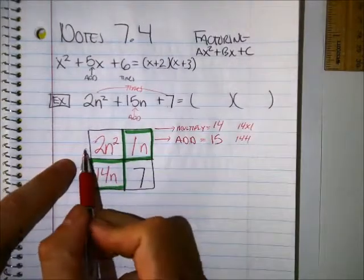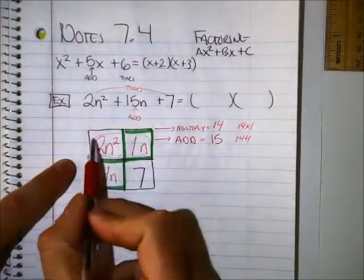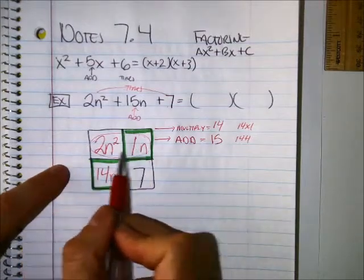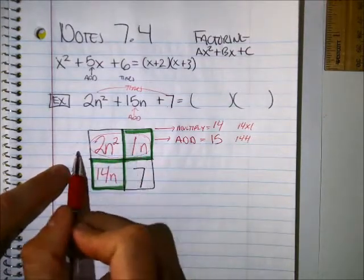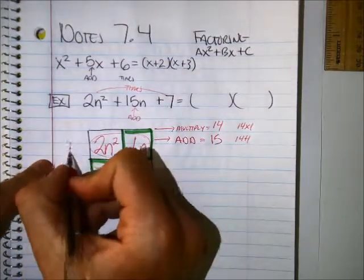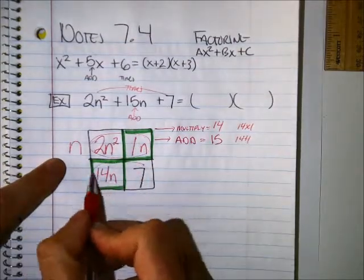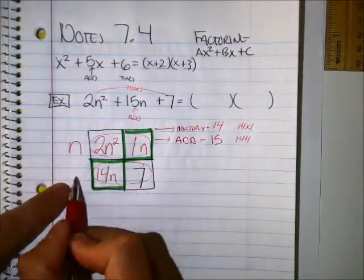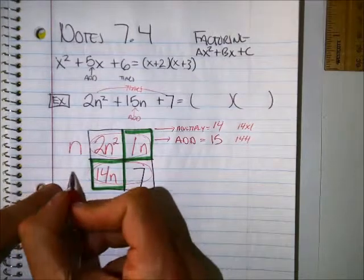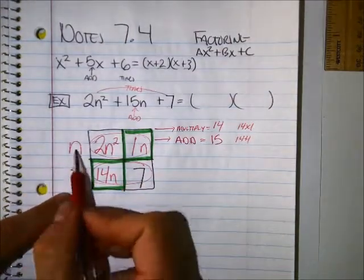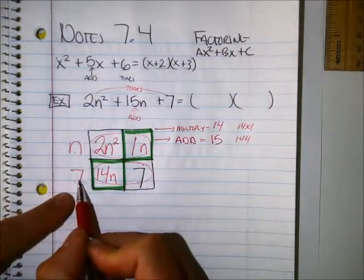So I'm going to factor now. Let's start with the side. 2n squared and a 1n. What can I factor out of both of those terms? Just 1 and an n. What about sideways here? What can I factor out of 14n and 7? Okay, so one of my terms is going to be n and 7.